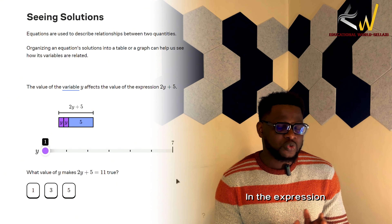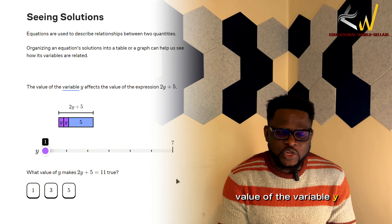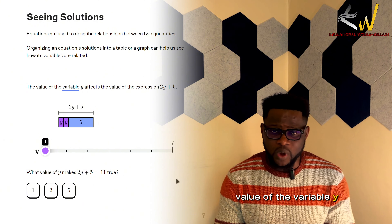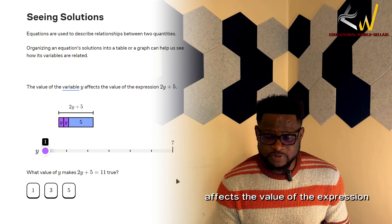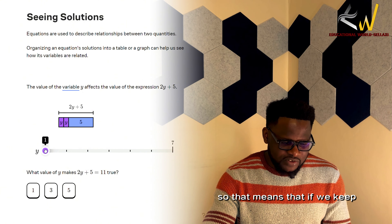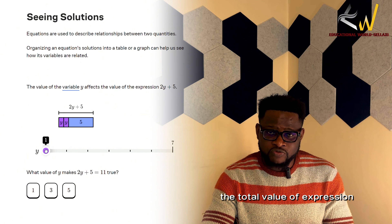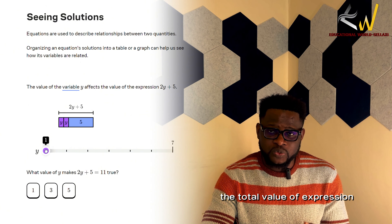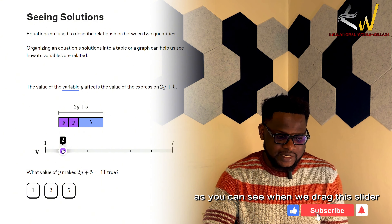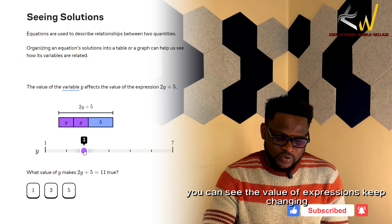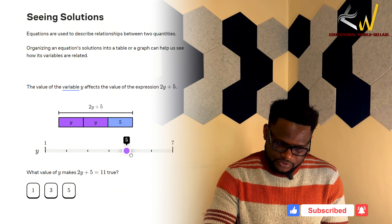In the expression 2y plus 5, we can see that the value of the variable y affects the value of the expression. That means that if we keep changing the value of y, the total value of the expression will continue to change. As you can see when we drag this slider, the value of the expression will keep changing.